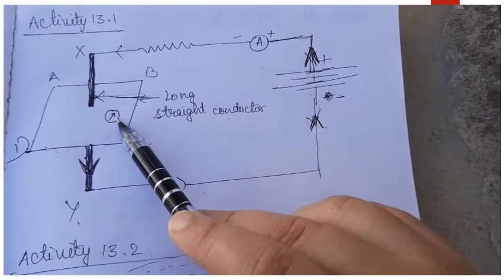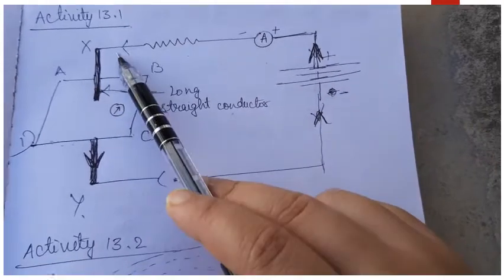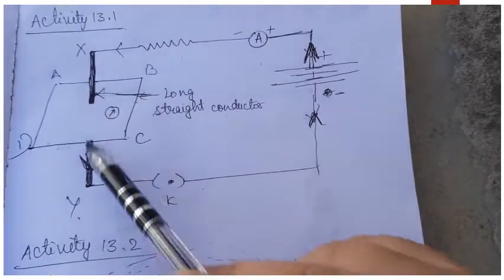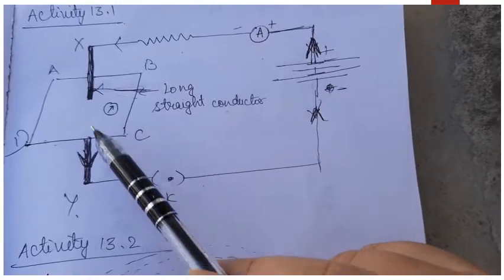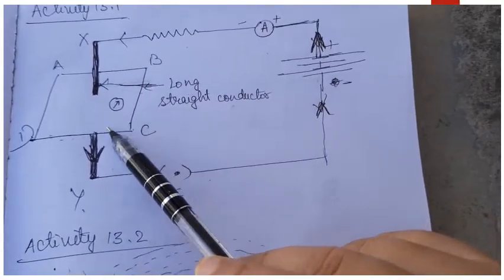Because compass only responds to the magnetic field, it proves that as soon as current starts to flow in a conductor, magnetic field is generated which results in the deflection of compass.